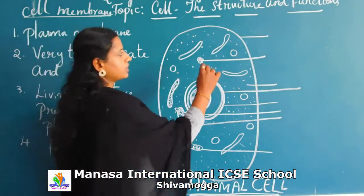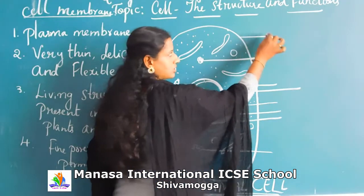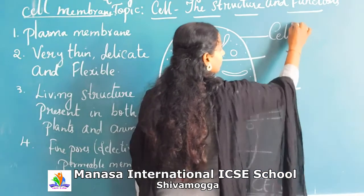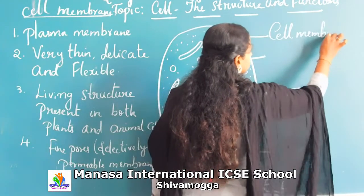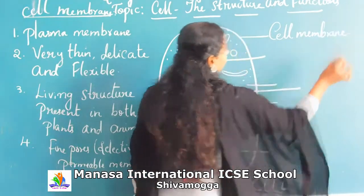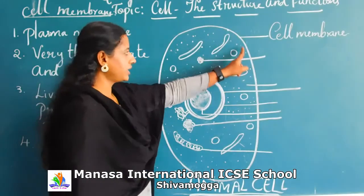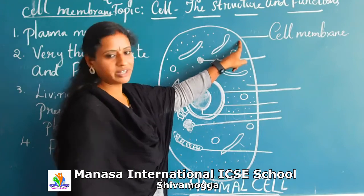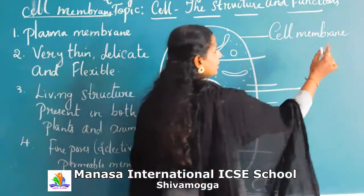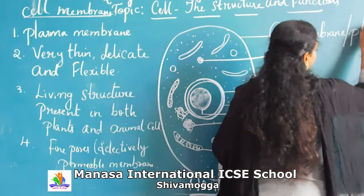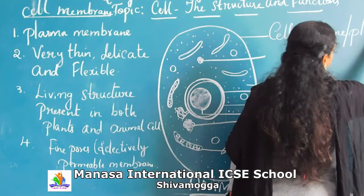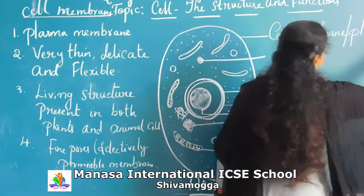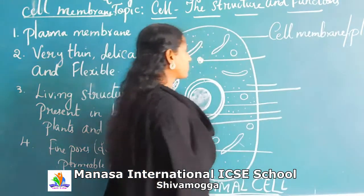Let me write a diagram here. The outer cover of the cell is known as the cell membrane. The outer layer is scientifically termed as cell membrane, or it is also known as plasma membrane.